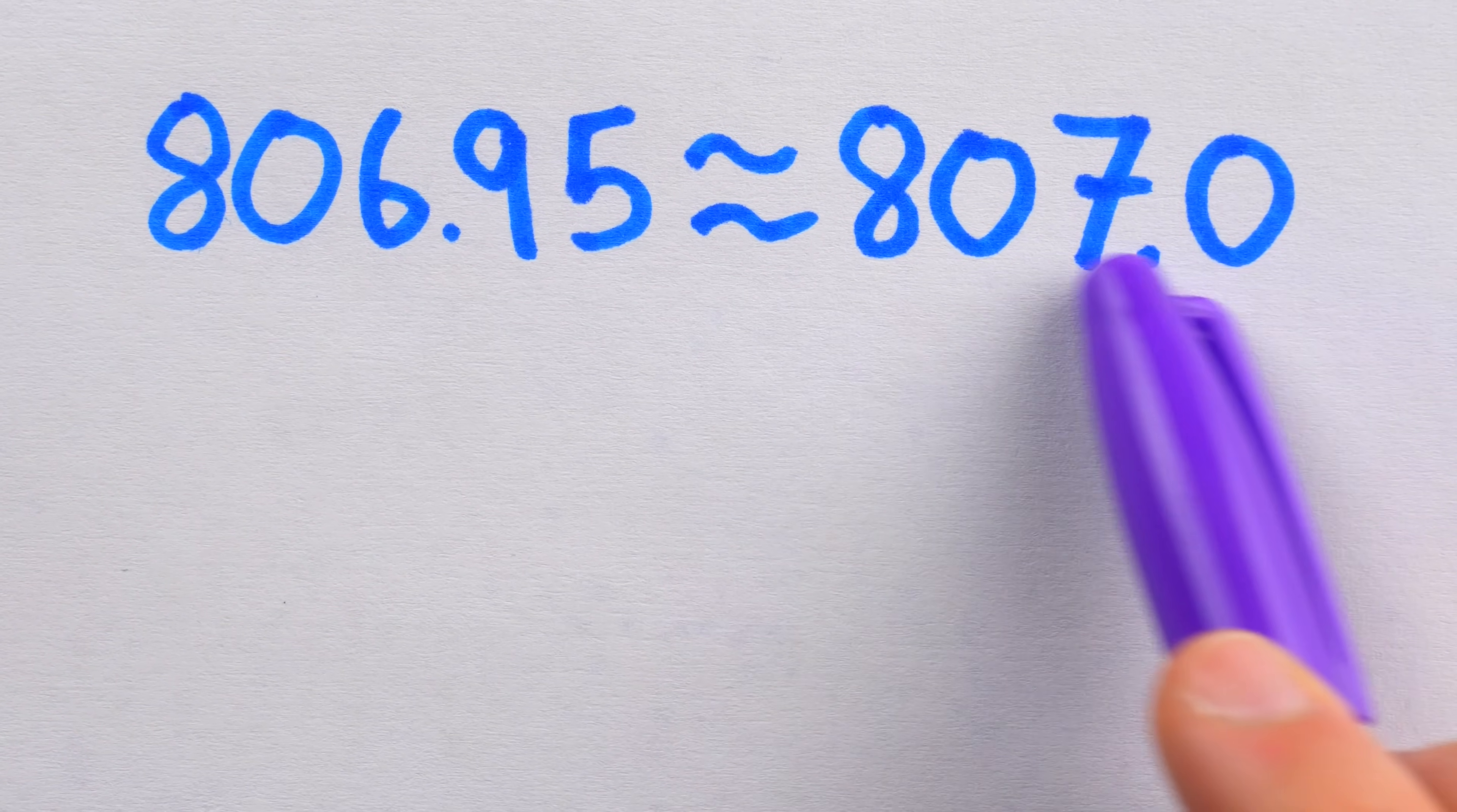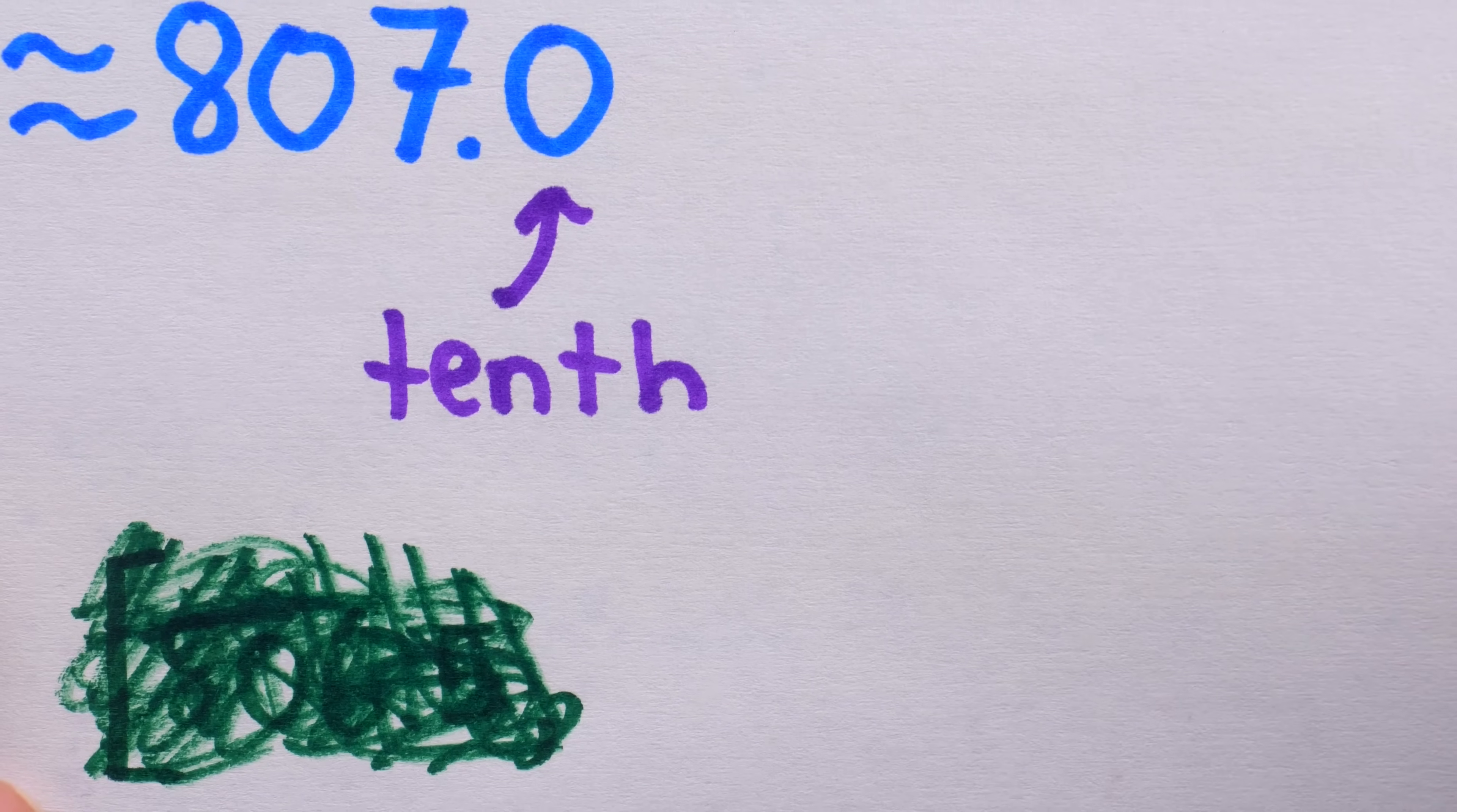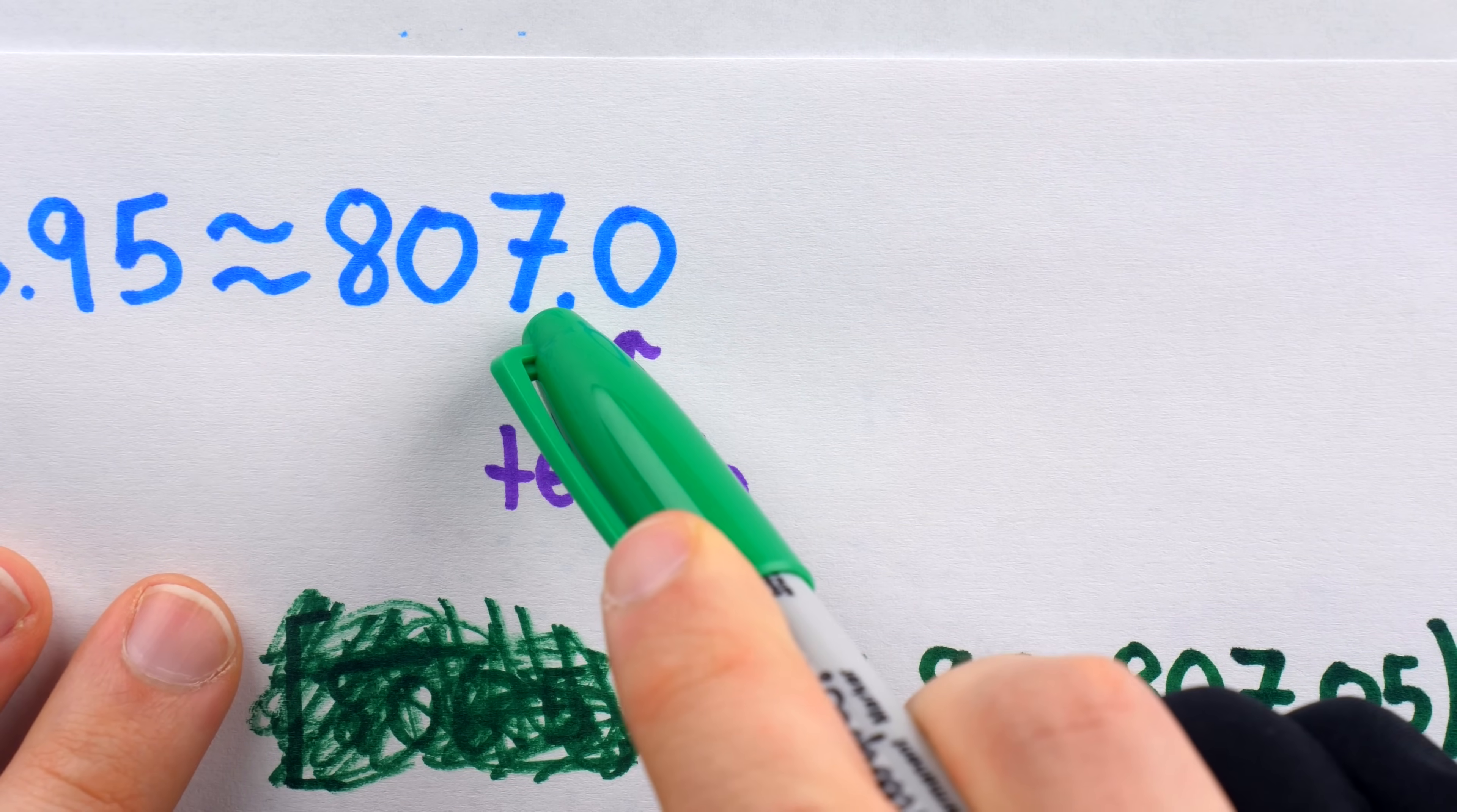Now imagine we're just looking at this number, knowing that it was rounded, but not that it was rounded from 806.95. Just looking at this number, we know that it was rounded to the nearest tenth because that's the last digit we have here. Then we might ask, what might the exact number be? We have it rounded, what's the exact number? Well, we don't know what the original number was exactly, but if we know that rounded to the nearest tenth it's 807, then we know that the original number could have been as small as 806.95.